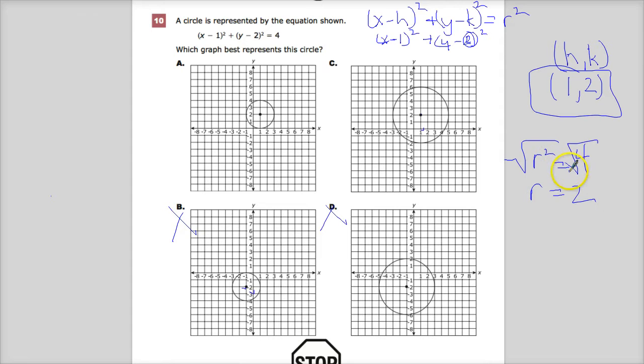The reason I take the square root, of course, is because the opposite of square is square root. It could be plus or minus 2, but since it's an actual distance, you don't have negative distances.